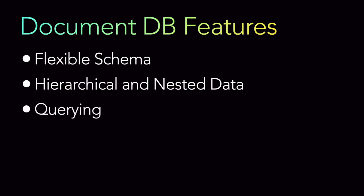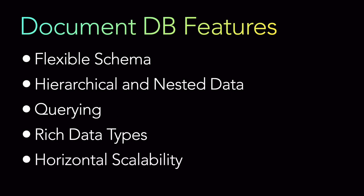Third is querying. Document databases often provide very powerful querying capabilities, including the ability to query based on the contents of a nested field within a document. Fourth is rich data types — document databases support various data types used in today's modern world: strings, numbers, arrays, dates, and even embedded sub-documents themselves. Fifth is horizontal scaling — many document databases are designed to scale out horizontally, distributing data across multiple servers or nodes to handle large amounts of data and higher traffic levels.